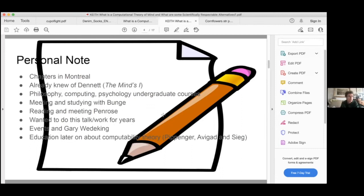My MA under Gary Wedeking at UBC was on events, it's also part of this puzzle. I learned a lot about computability theory from many, many different sources, including Nicholas Pippenger, Jeremy Avigad, and my own later mentor at Carnegie Mellon, Wilfred Sieg, who you'll hear about.